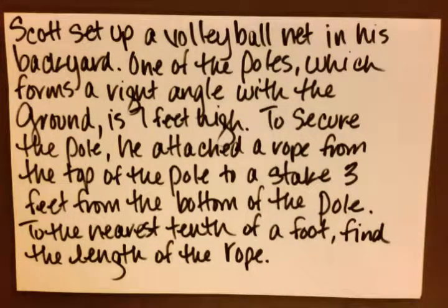Scott set up a volleyball net in his backyard. One of the poles, which forms a right angle with the ground, is seven feet high. To secure the pole, he attached a rope from the top of the pole to a stake three feet from the bottom of the pole. To the nearest tenth of a foot, find the length of the rope.